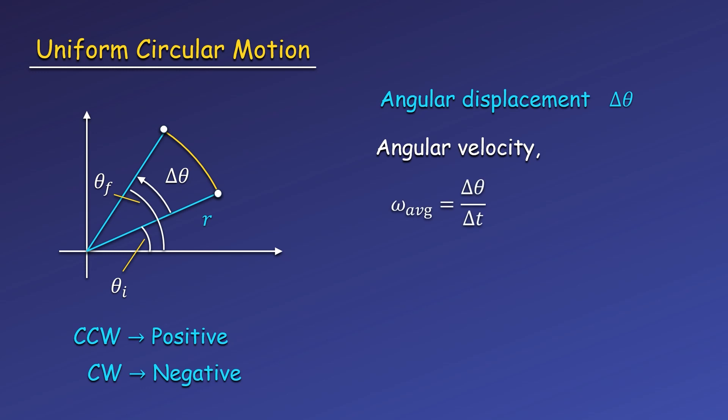We can also define angular velocity ω as we did with linear velocity, now just using angular displacement over time. The instantaneous angular velocity can be defined in terms of a derivative as well. In this case, average and instantaneous velocity will be the same since it is constant. Since the object will be moving through the same distance per time, the angle the object sweeps through will also be constant with time.